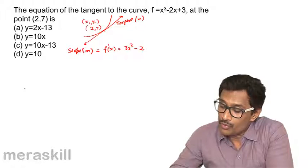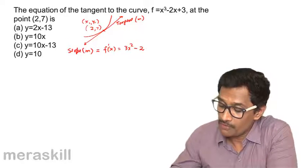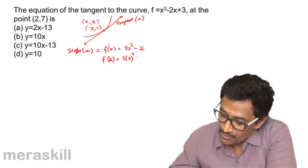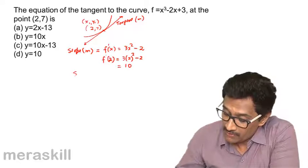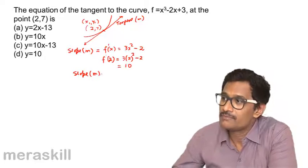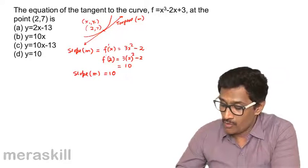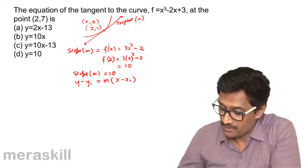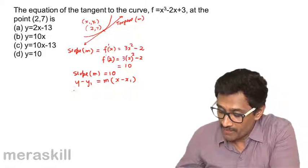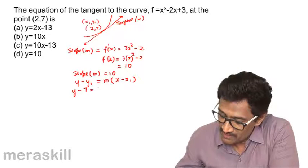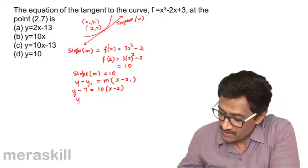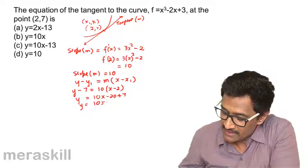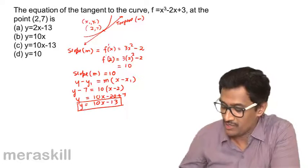We want the slope at x = 2. So 3x² - 2 at x = 2 turns out to be 3×4 - 2 = 10. The slope m = 10. We use the point-slope form y - y₁ = m(x - x₁). This gives y - 7 = 10(x - 2), which becomes y = 10x - 20 + 7 = 10x - 13.